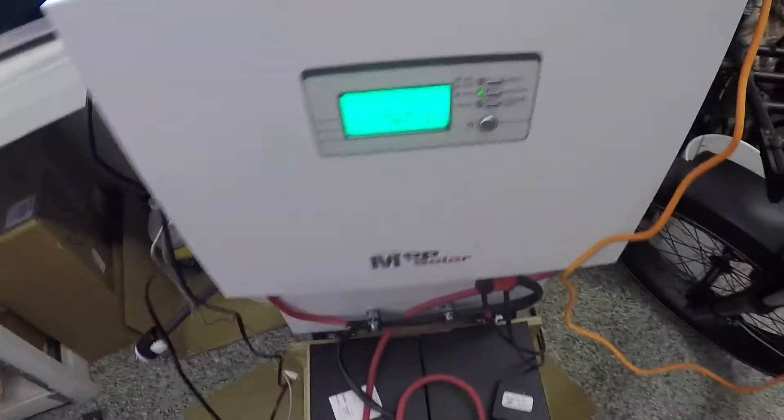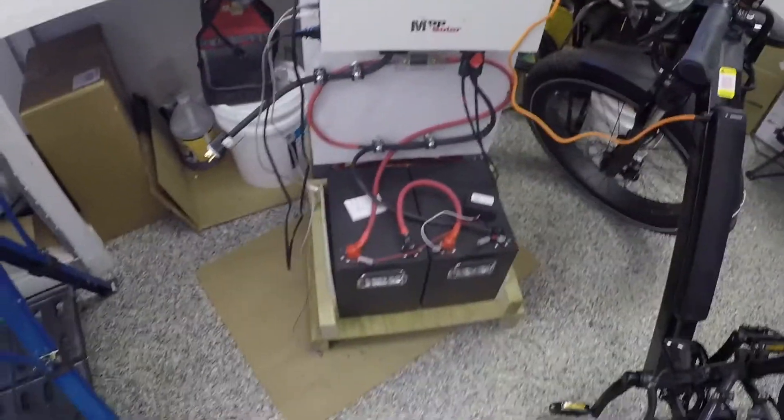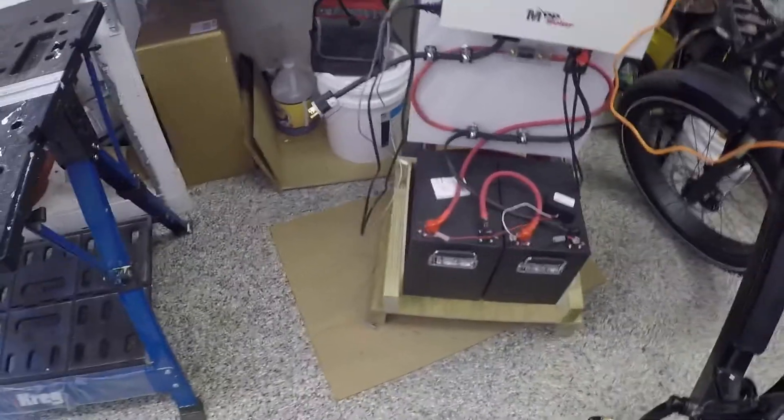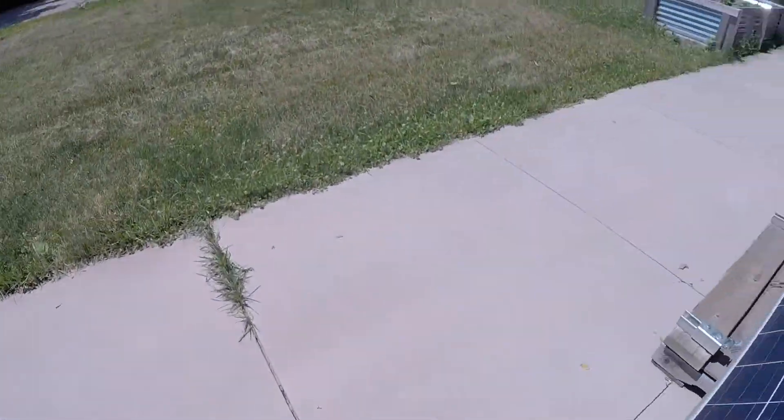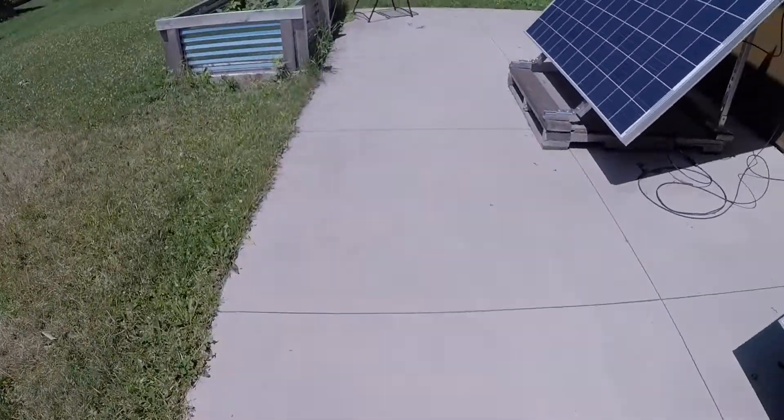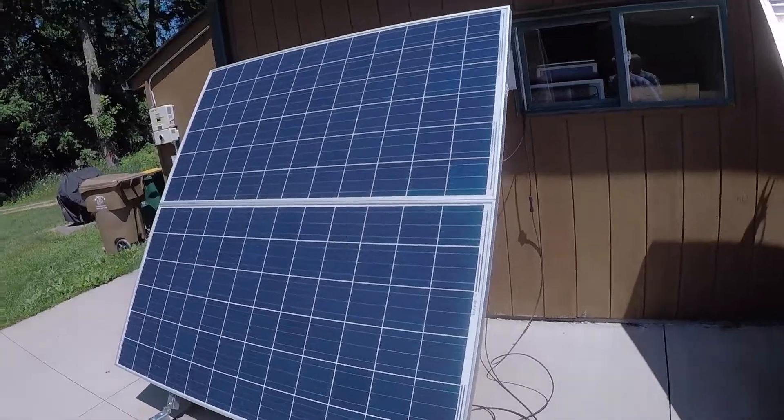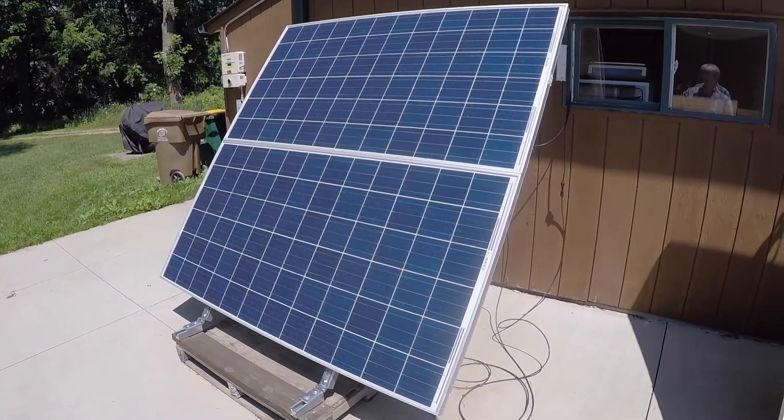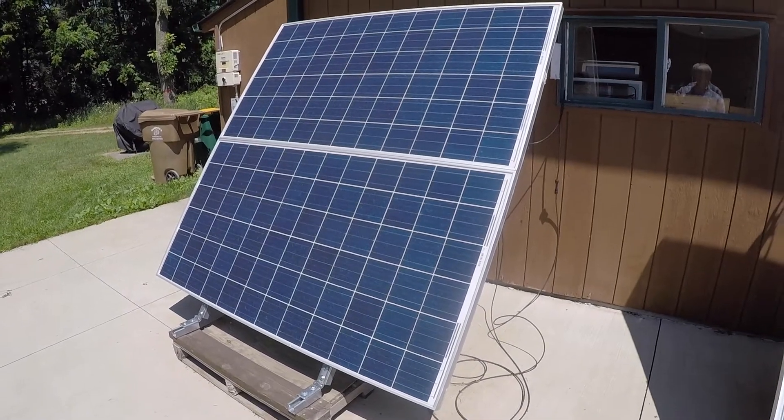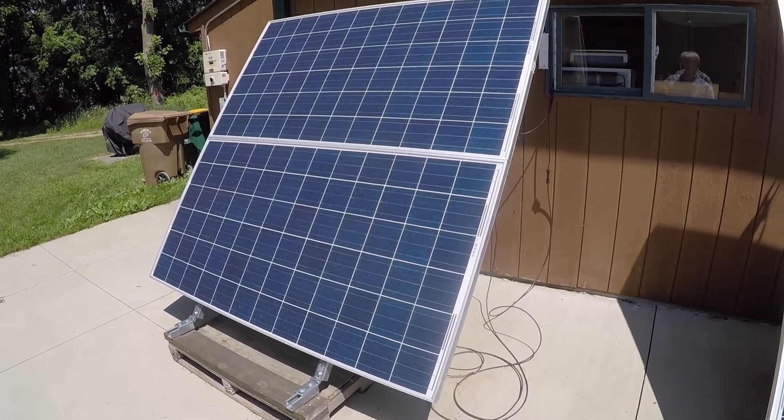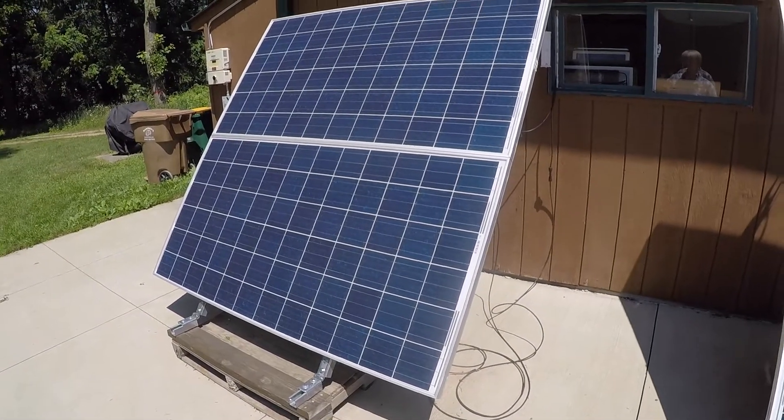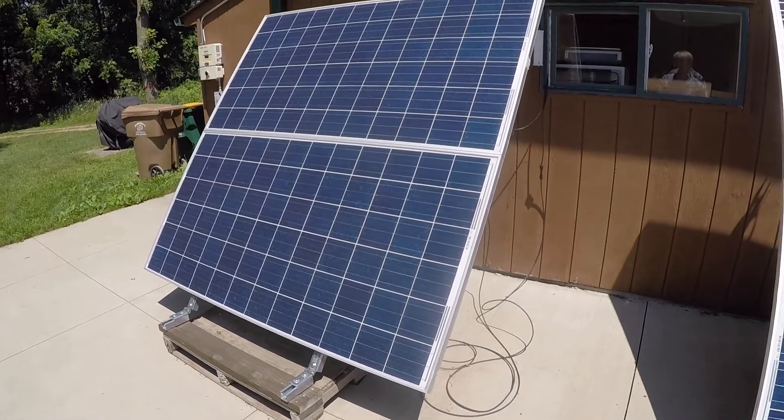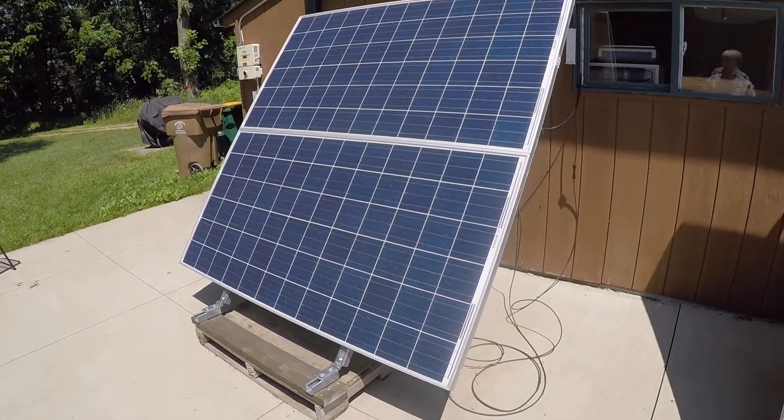So to feed all this, to charge all this, I have two solar panels out here. Do a quick walk out. Beautiful sunny day today. We're getting good solar. So I have two REC 310-watt panels, so 620 watts is feeding that inverter and charging the batteries and charging the e-bike.